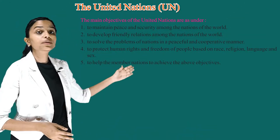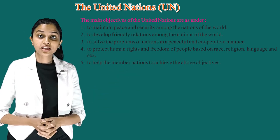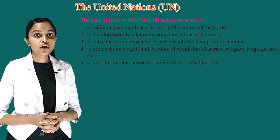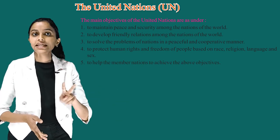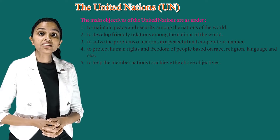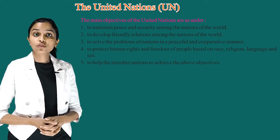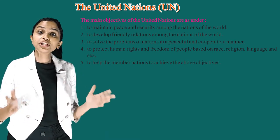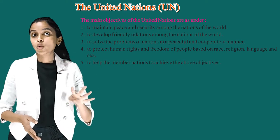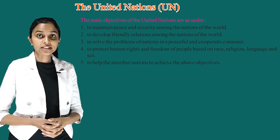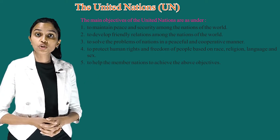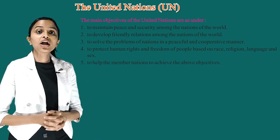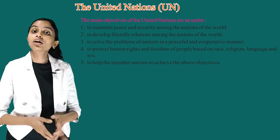The main objectives of the United Nations are as under. First, to maintain peace and security among the nations of the world. Second, to develop friendly relations among the nations of the world. Third, to solve the problems of nations in a peaceful and cooperative manner. Fourth, to protect human rights and freedom of people based on race, religion, language and sex. Fifth, to help the member nations to achieve the above objectives.